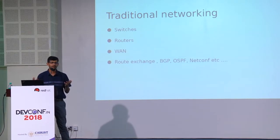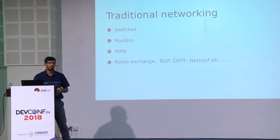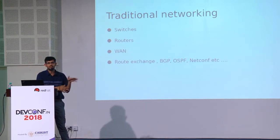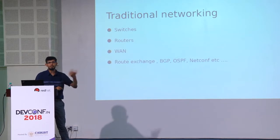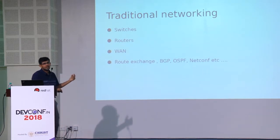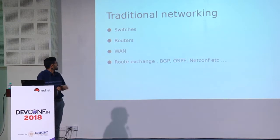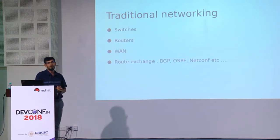Let's say you are in your office — you've connected your laptop, and all your colleagues are connected to the network, so all machines can talk to each other. That happens because somewhere underlying you have a physical switch in your office campus or data center. That switch forwards the packets. You also have routers — if you want to talk to the internet or other IP addresses, you need routers which route the packets.